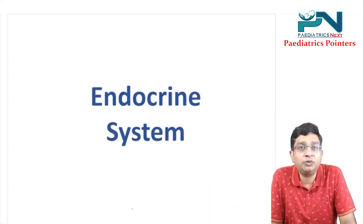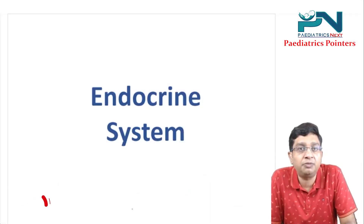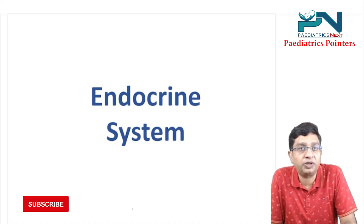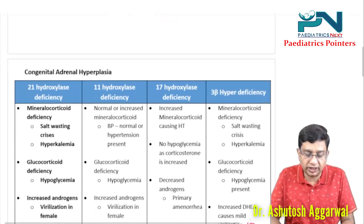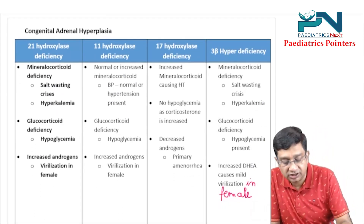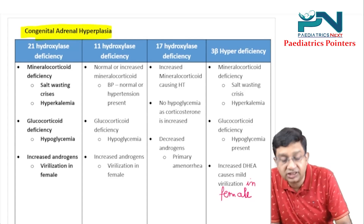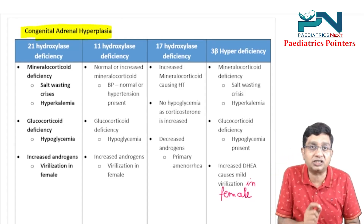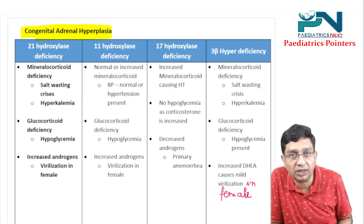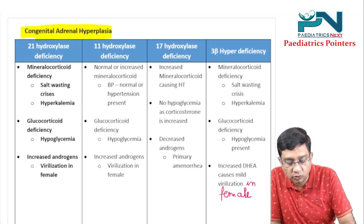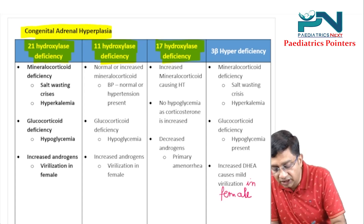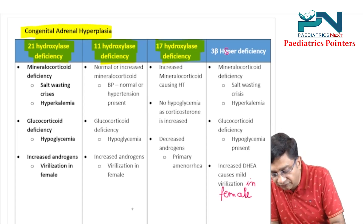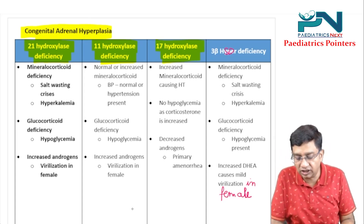Welcome to the Pediatrics Pointer, the ultimate pediatrics revision series. Today's topic is from the endocrine system: Congenital Adrenal Hyperplasia (CAH). As the name indicates, there is increase in the size of adrenal glands since birth. There are four major enzyme deficiencies which can cause CAH: 21-hydroxylase deficiency, 11-hydroxylase deficiency, 17-hydroxylase deficiency, and 3-beta HSD deficiency.